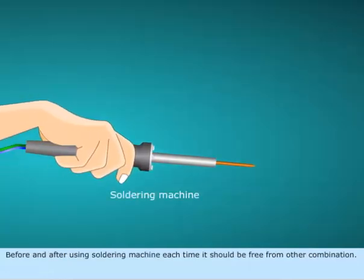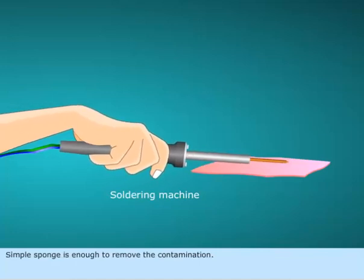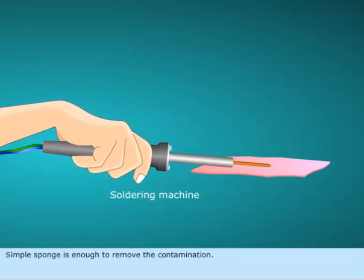Before and after using soldering machine, each time it should be free from contamination. A simple sponge is enough to remove the contamination.